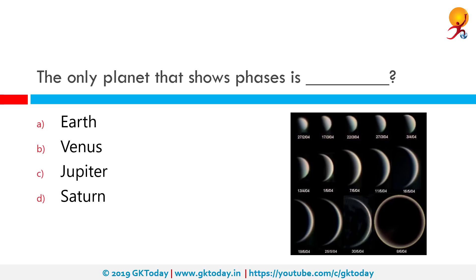The only planet that shows phases is Venus. Through a small telescope, it is possible to see Venus undergo phases just like the Moon. This occurs because from our point of view on Earth, we see only the parts of Venus illuminated by sunlight at any given time. However, unlike the Moon, Venus is usually brighter in its crescent phase than in its full phase.